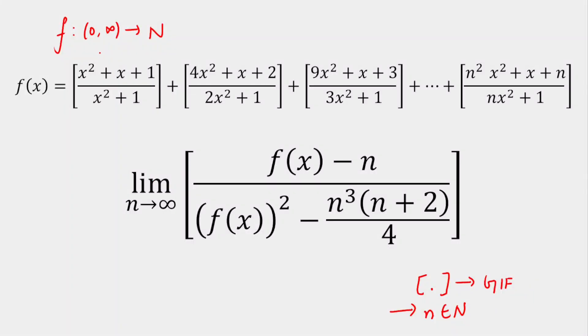Today we are going to solve a question from limits. The question is: if a function is defined from the domain (0, ∞) open interval to natural numbers as a co-domain, then f of x is given as the GIF of the following values.